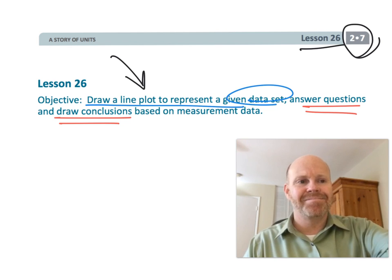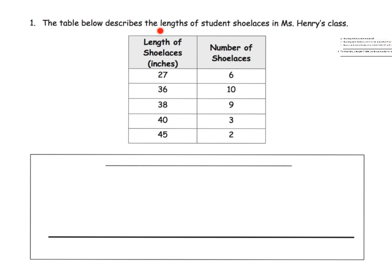Let's get started. We have a table describing the lengths of student shoelaces in Miss Henry's class. You can see the lengths go from 27 up to 45. We have a lot of gaps, and you can see the number of students who have those lengths of shoelaces.